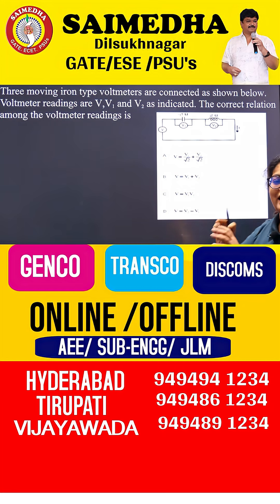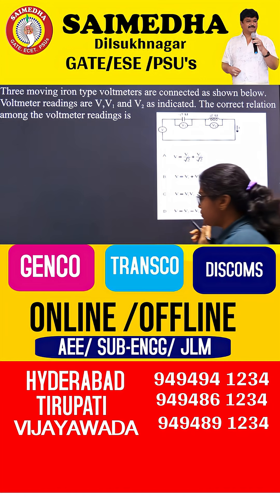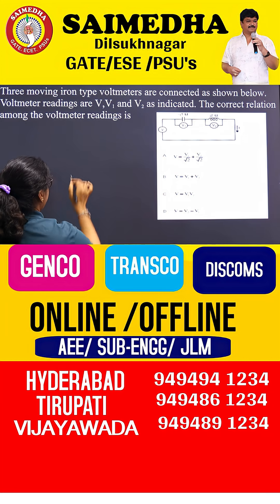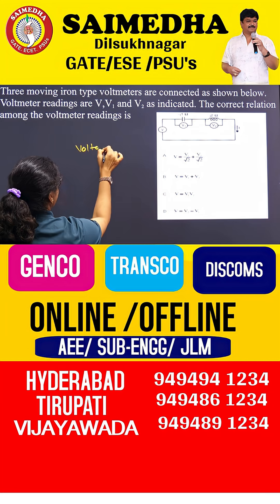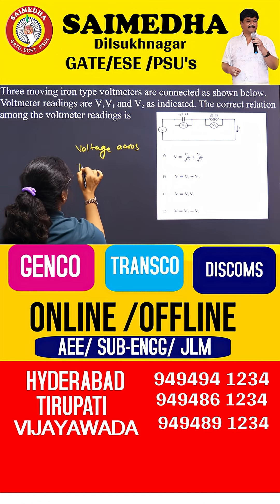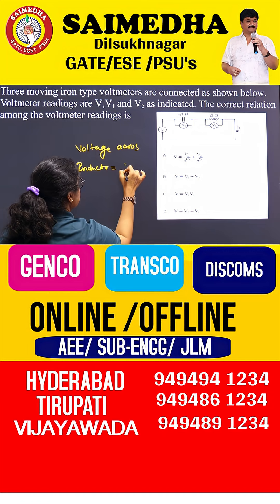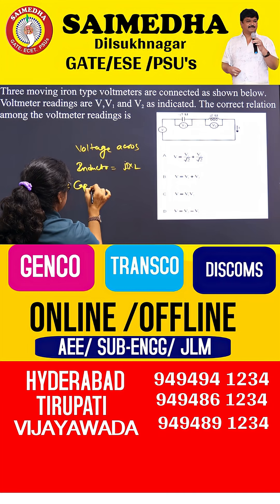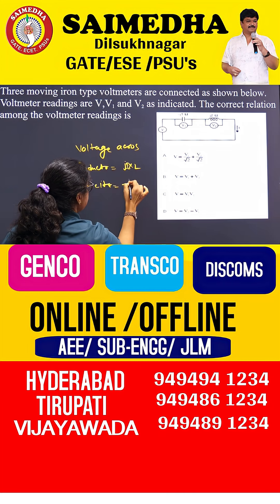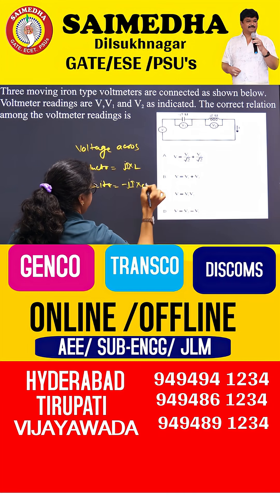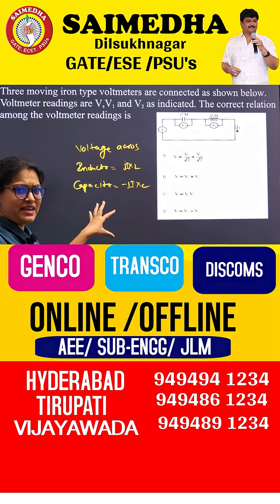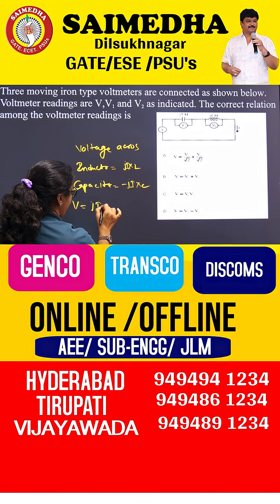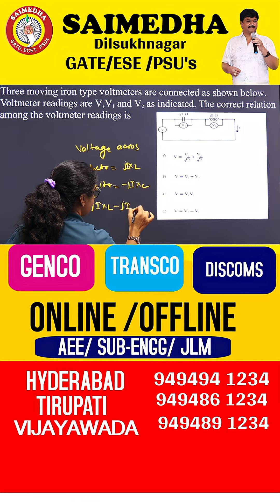If you observe the question, they are asking what is the correct relation. So before knowing the correct relation, what is the voltage across the inductor? V1 is across the inductor. So that will be J into XL, I into XL. At the same time, for a capacitor, we write as minus J·i into XC. So this is the voltage across the inductor and the capacitor. If you go with the net voltage, V is equal to J·IXL minus J·IXC.